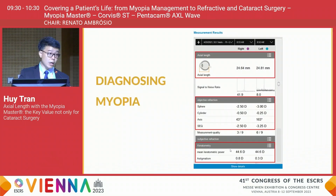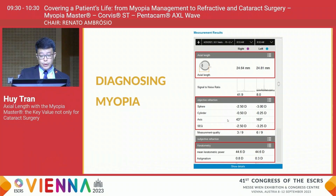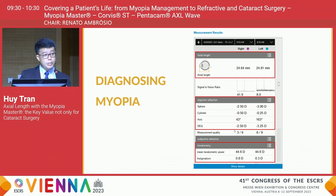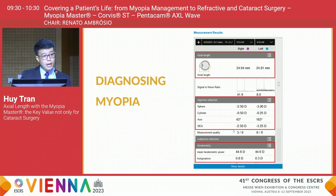Looking at a capture from a clinical case at our clinic: with one capture, the result includes the axial length, the refraction, and the keratometry. The keratometry can be displayed either in diopters or in millimeters. We can then easily calculate the ALCR for each case to have a better understanding of the condition of myopia.